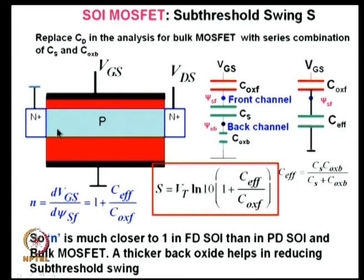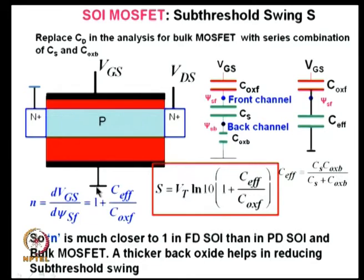When you use a double gate MOSFET, the coupling between the gate and the channel will be excellent and you will get 60 millivolts per decade. When the whole silicon layer is depleted, whatever gate voltage you change goes to the junction, so delta Vg equals delta psi_s — the ideal factor equals 1. So you get 60 millivolts in a double gate MOSFET.